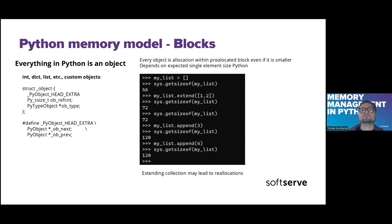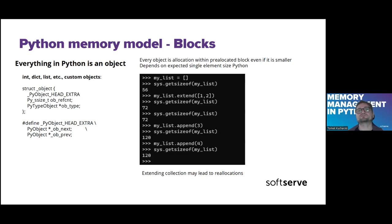Sometimes when we add new elements and the size grows, there could appear problems because there could be no room for the extension. In this case, Python needs to reallocate the whole list, and it cannot be done in place. We have to find a place in arenas or pools to find a contiguous block of memory. This can influence program performance because the whole process will have to take place at the moment we call this method.